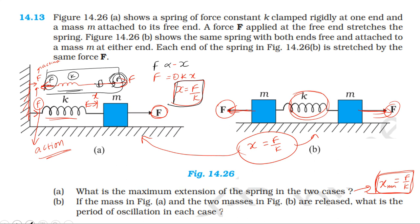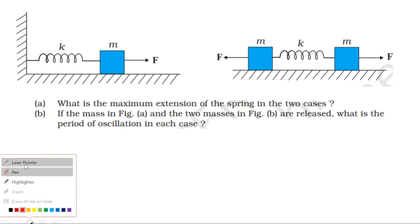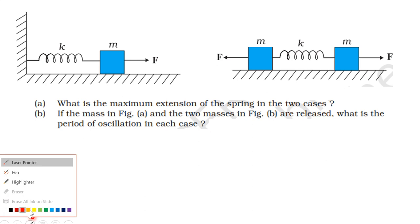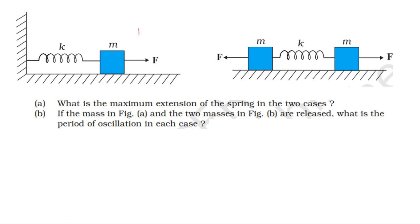Now for the second question: the period of oscillation. Generally, time period T is equal to 2π times the square root of m by k. In the first case, T equals 2π root of m by k. For the second case, T is also initially written as 2π root of m by k.